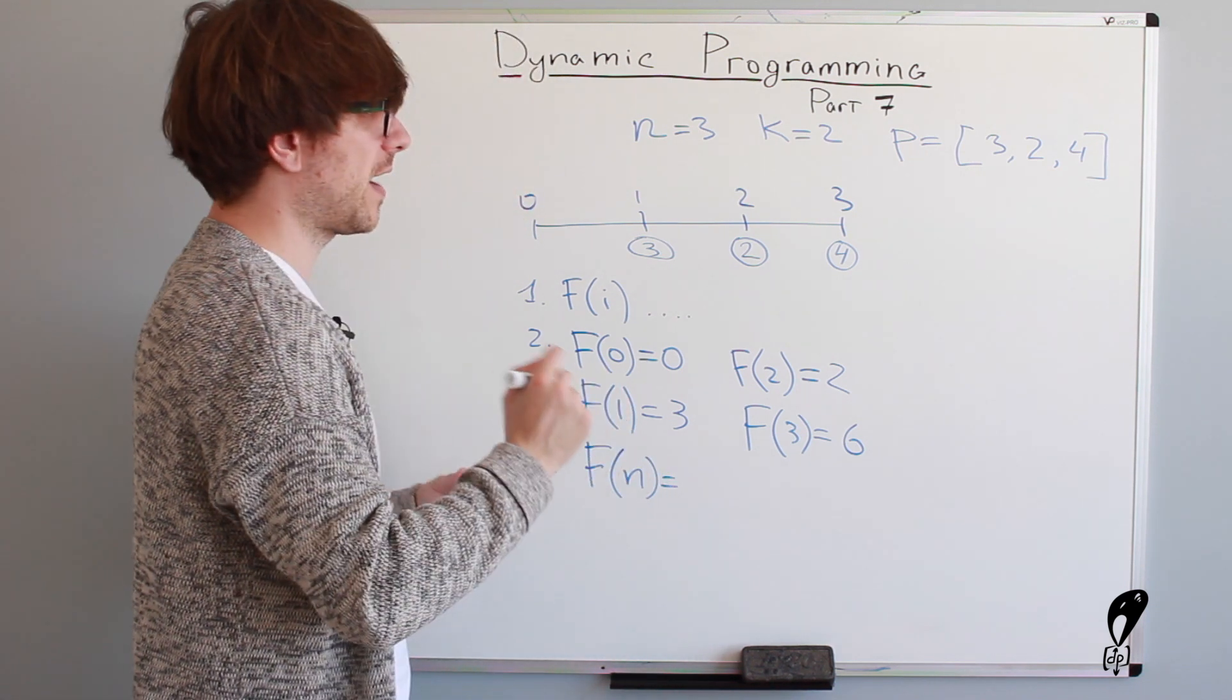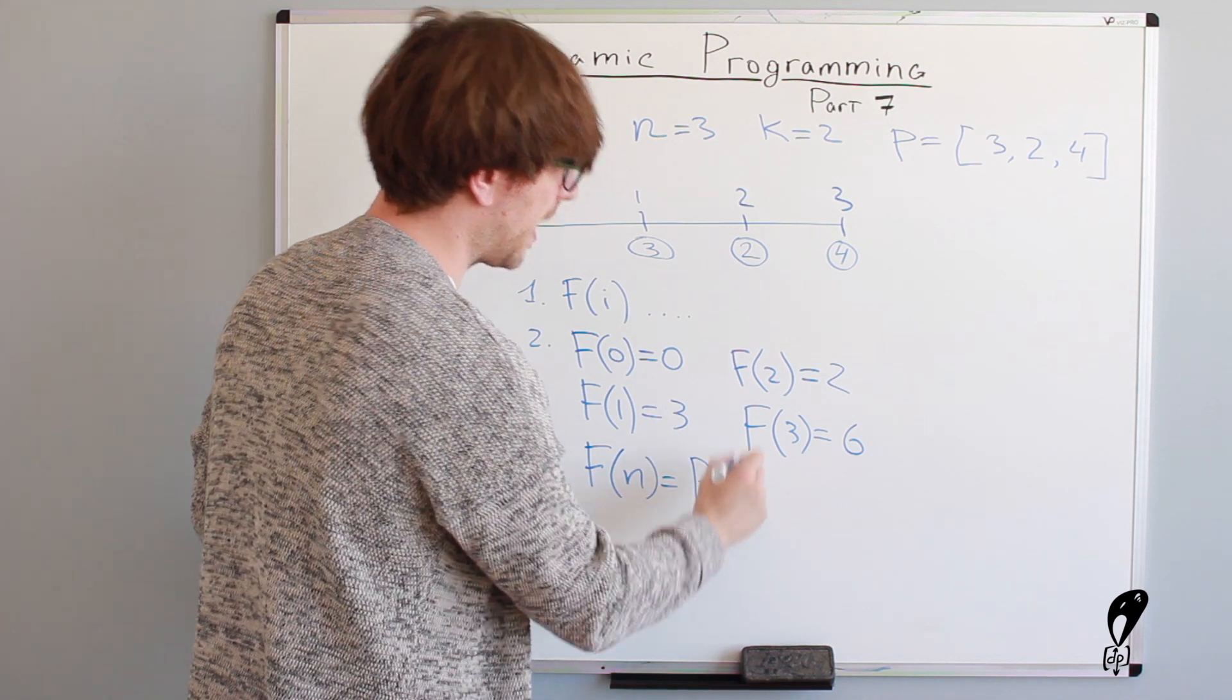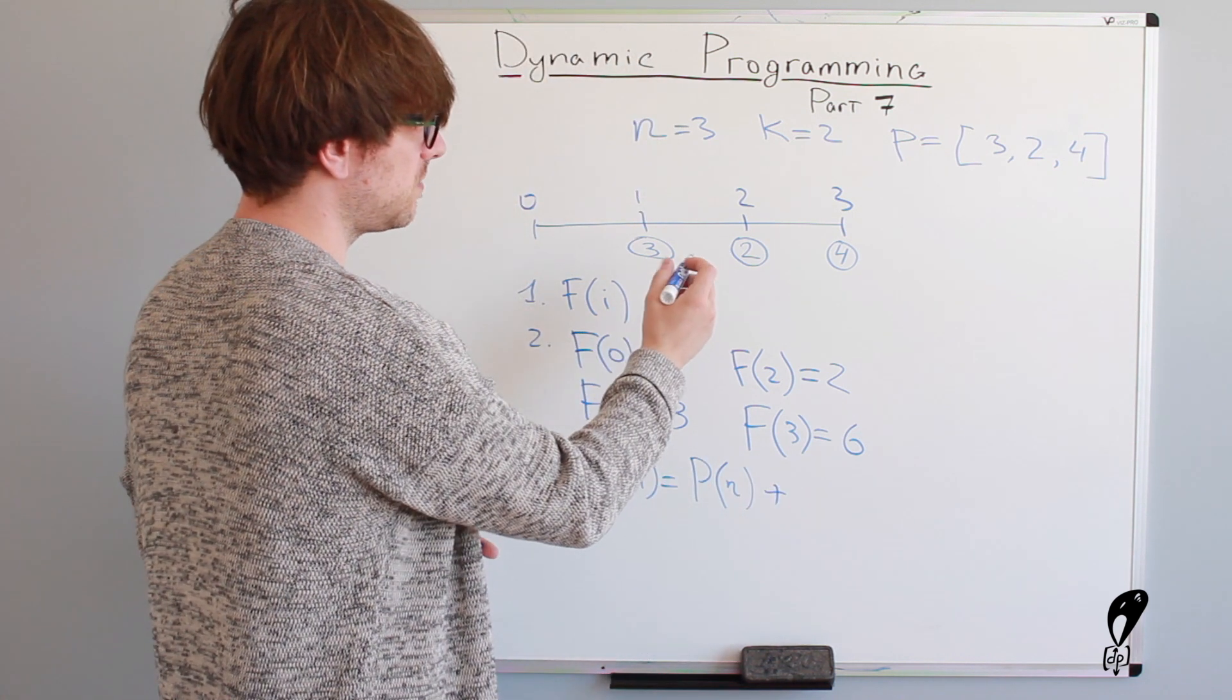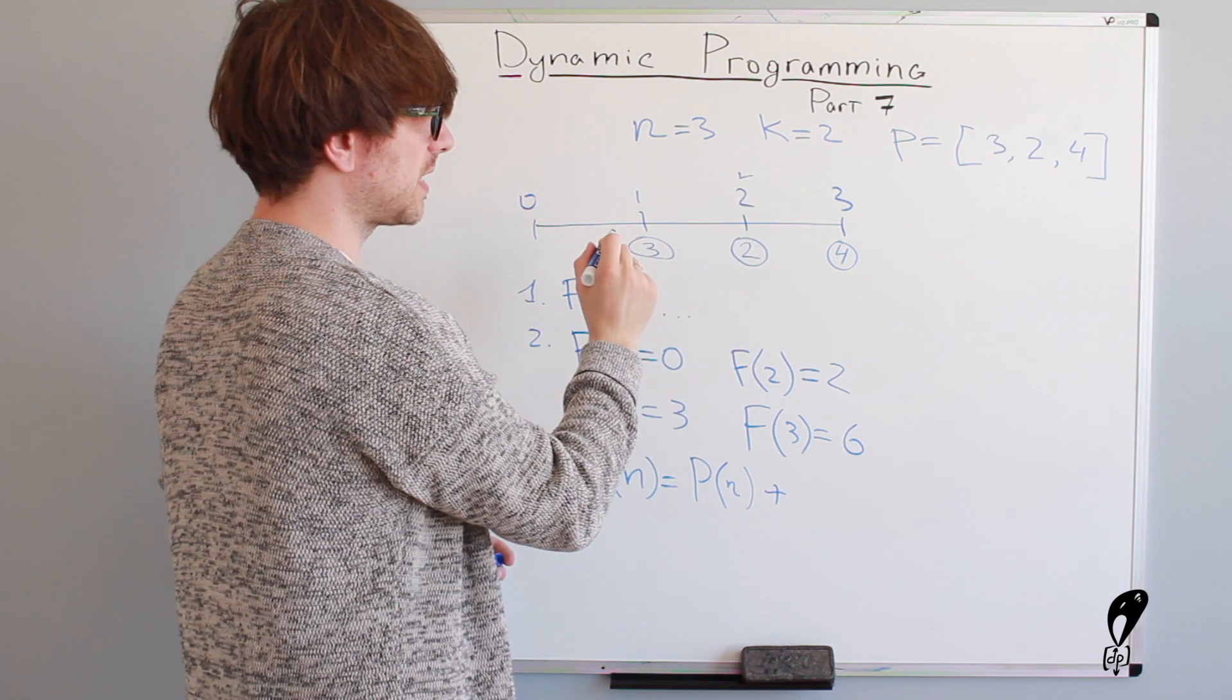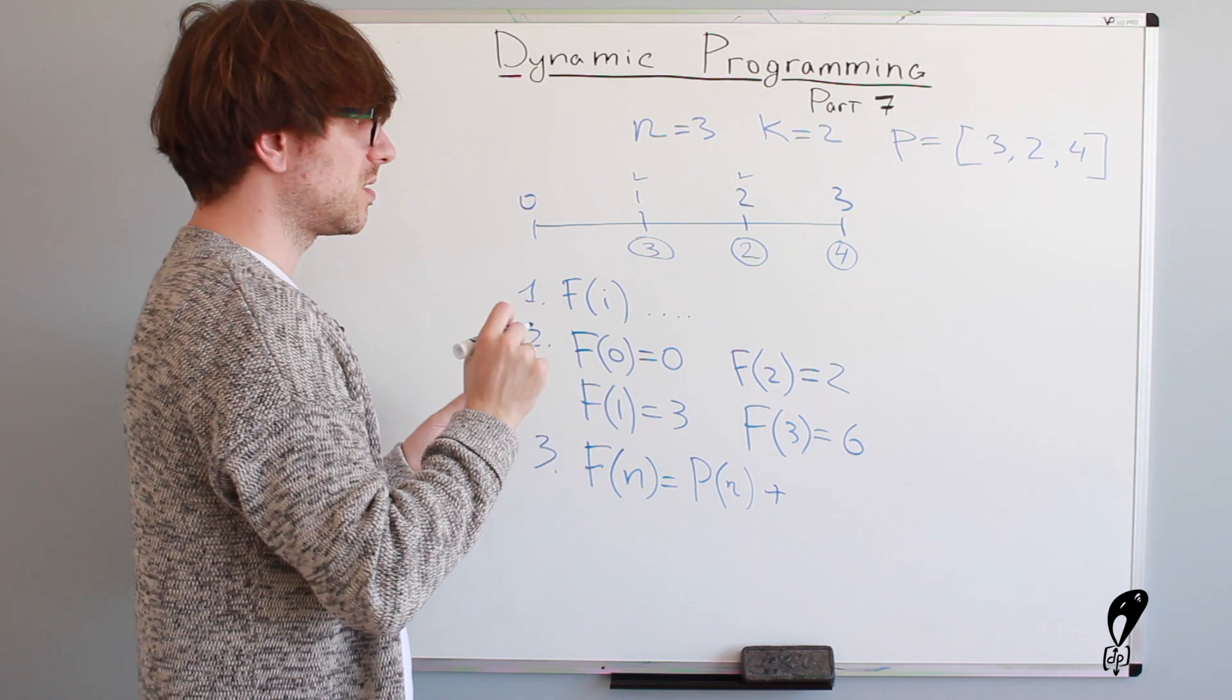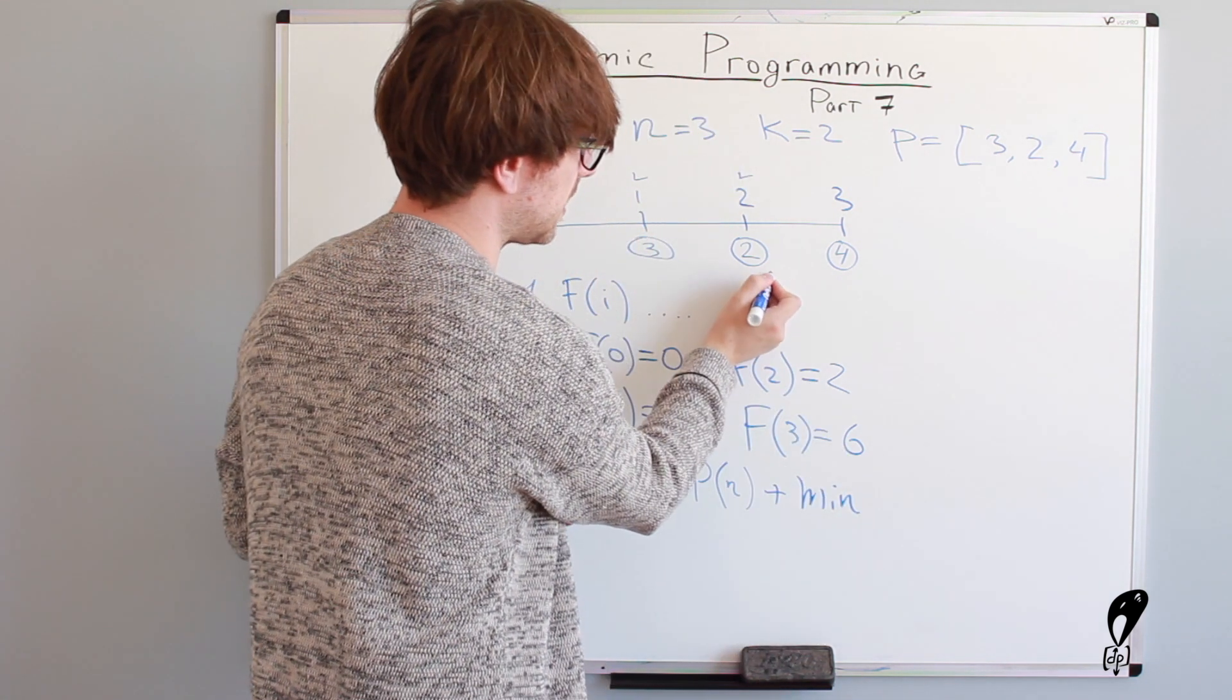And what's the amount we have to pay to get to the last step? It's four dollars. So it's p of n. We have to pay four dollars no matter what. We'll always have to pay it. So it's p of n plus, what else? Plus, we have to be prior to the last step, we were either here on the second step, or on the first one. But we want to take, we want to be at the one which costed us less. So we want the minimum between the two.